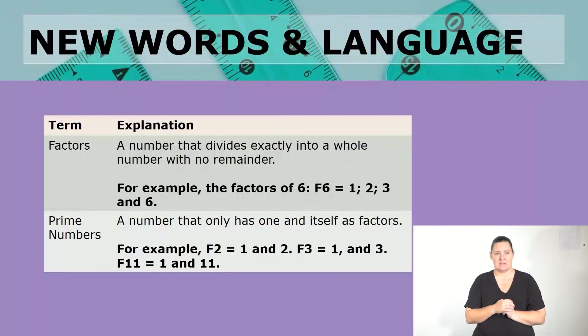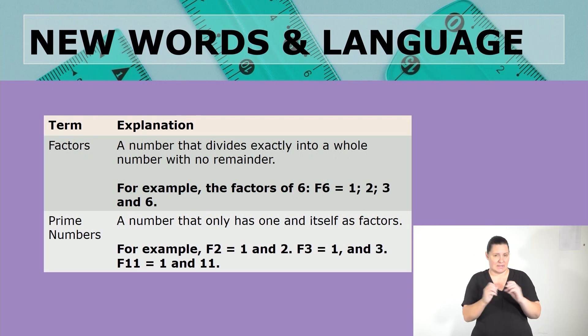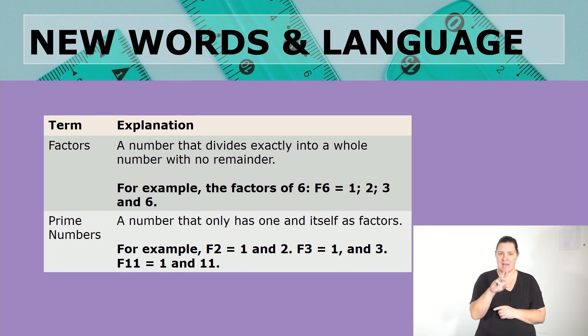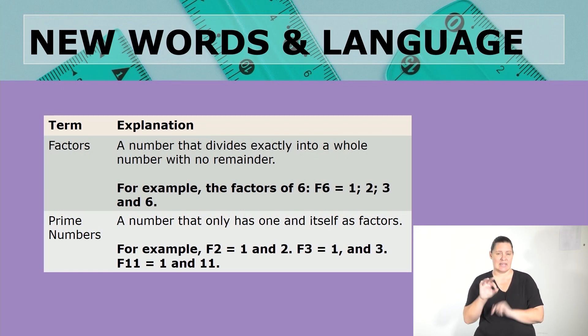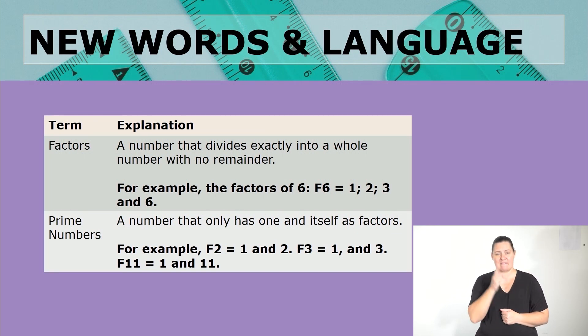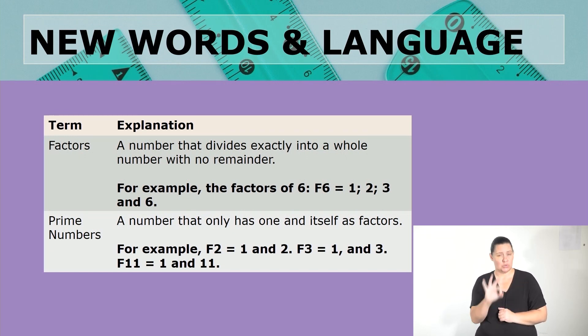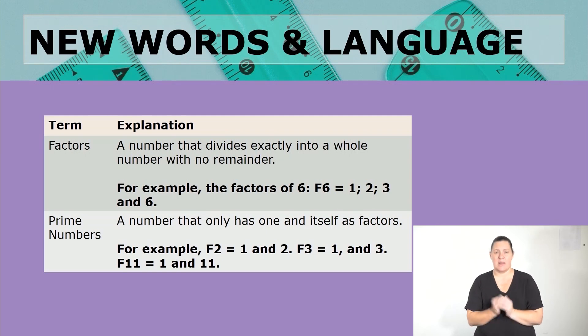A factor is a number that divides exactly into a whole number with no remainder. For example the factors of 6, written F(6), are 1, 2, 3, and 6. A prime number is a number that only has one and itself as factors — for example the factors of 2 are 1 and 2, the factors of 3 are 1 and 3, and the factors of 11 are 1 and 11.